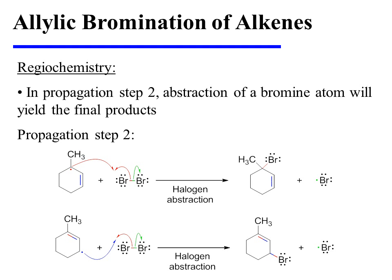In propagation step 2, abstraction of a bromine atom will yield the final allylic bromide products. However, in this instance, the two resonance forms of the allylic radical are not identical to one another, so we should consider the reaction of each. The abstraction of bromine by each of these allylic radicals yields two regioisomeric allylic bromide products.